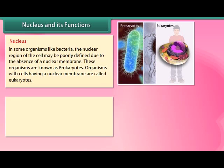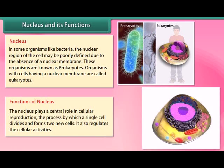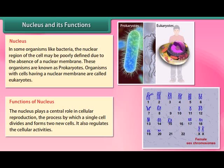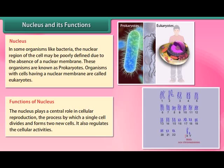The nucleus plays a central role in cellular reproduction — the process by which a single cell divides and forms two new cells. It also regulates cellular activities.